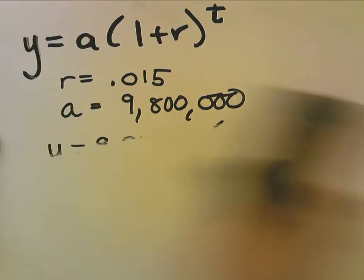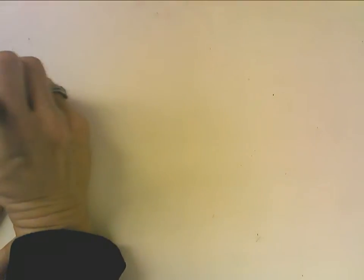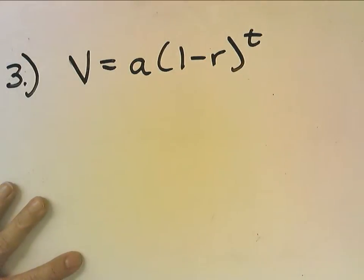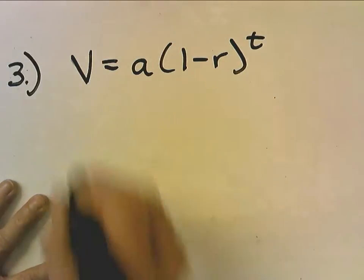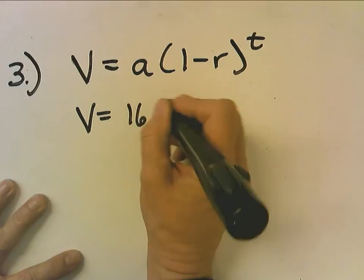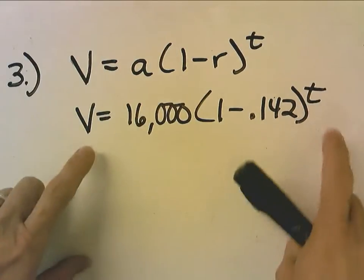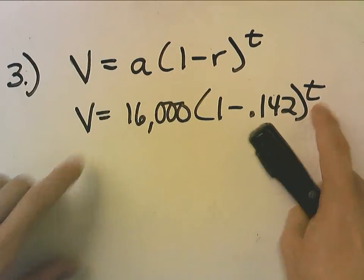Let's turn the page and do another one. So, the next one says, number three, Jana buys a new car for $16,000. The value of the car decreases by 14.2% per year. Write a function to model the value of Jana's car over time. Well, first, I'm going to say, v equals a times 1 minus r to the t, because that's the decay model. V equals the initial price, 1 minus .142, which is the decay rate, to the t. So, this is the function over time, 1 unknown, 2 unknown.